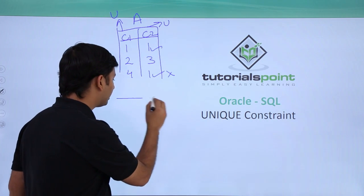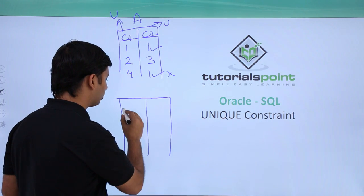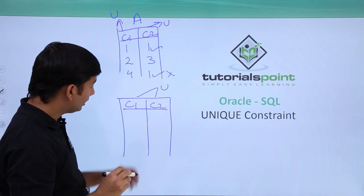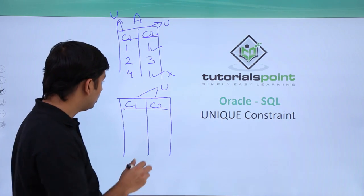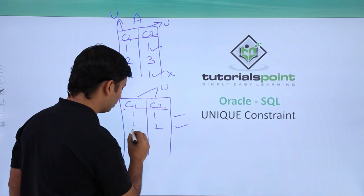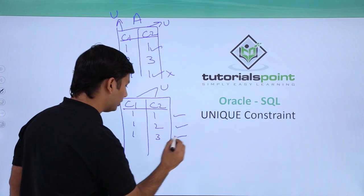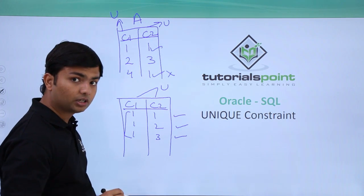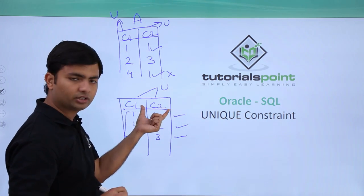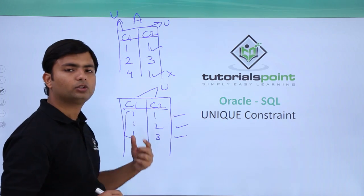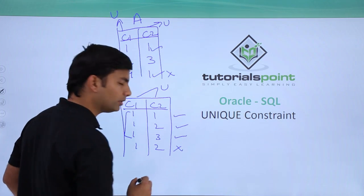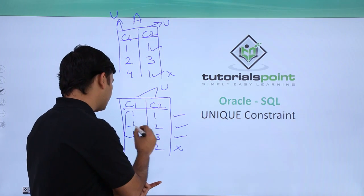In another case, with the same table having columns C1 and C2 but with a combined unique constraint at the table level, combination uniqueness is checked. So (1,1), (1,2), and (1,3) are all fine — there are repeated values in C1, but the constraint is on the combination. These three are unique combinations. If you try to enter (1, 2) again, it will not be allowed because that combination is already present.